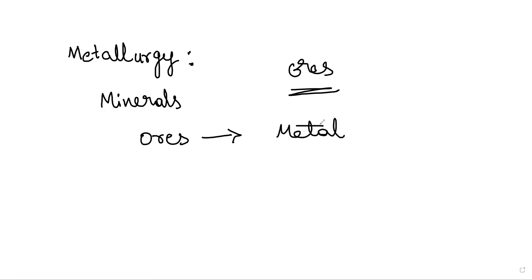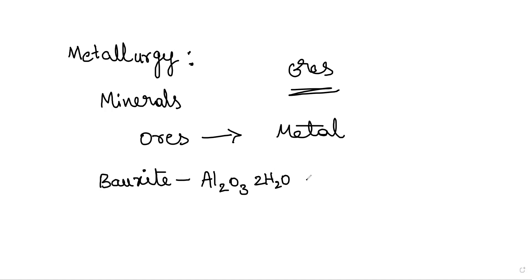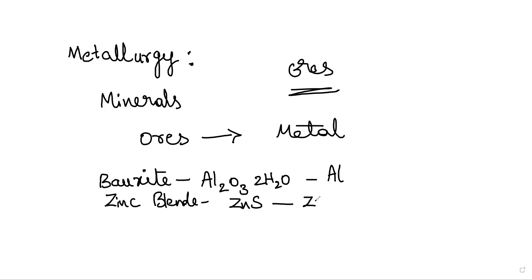I will explain this to you. For example, we have some ores. One important example is Bauxite. The formula is Al2O3·2H2O. What we need is aluminum — if there is oxygen and water, we remove the aluminum. Another example is Zinc blende, whose formula is ZnS — zinc sulfide. Here we use sulfur and zinc.